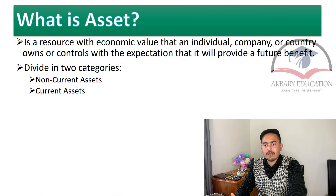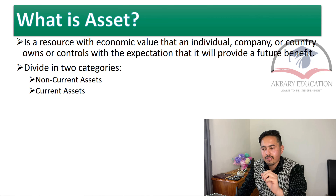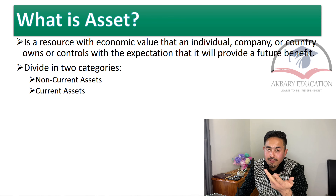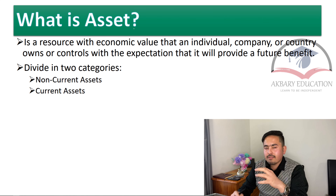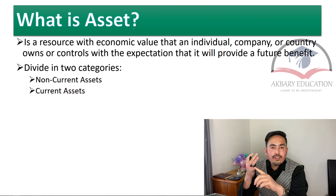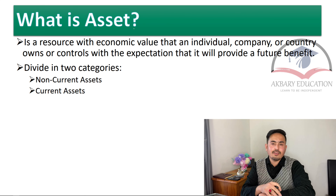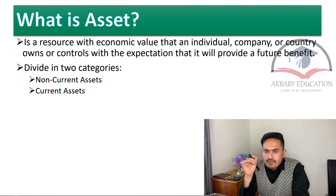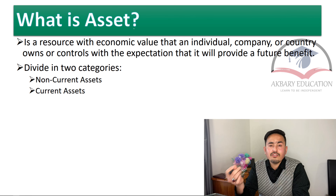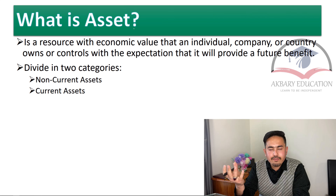We are going directly to the beginning with what is an asset. An asset is a resource with economic value, meaning there is economic value with it, that an individual, company, or country owns or controls — meaning they have the full power of usage and utilizing it — with the expectation that it will provide a future benefit. For example, if you have a computer and use it for video editing, you are generating income from it, or when you sell it you receive cash. That's the benefit from the asset.